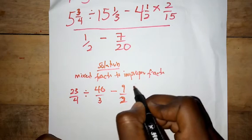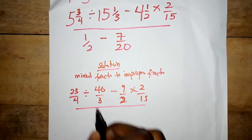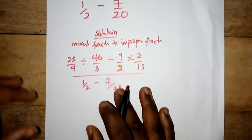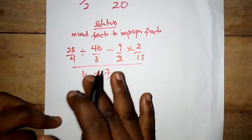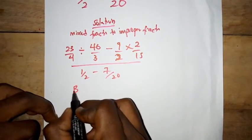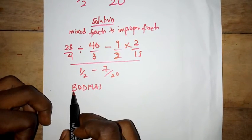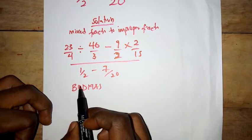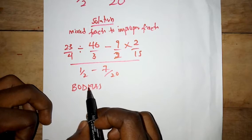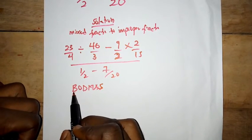Then we have 10 times 2 over 15, all divided by 1 over 2 minus 7 over 20. Now we have the entire equation in improper form. We are going to apply BODMAS — Bracket, Of, Division, Multiplication, Addition, and Subtraction.